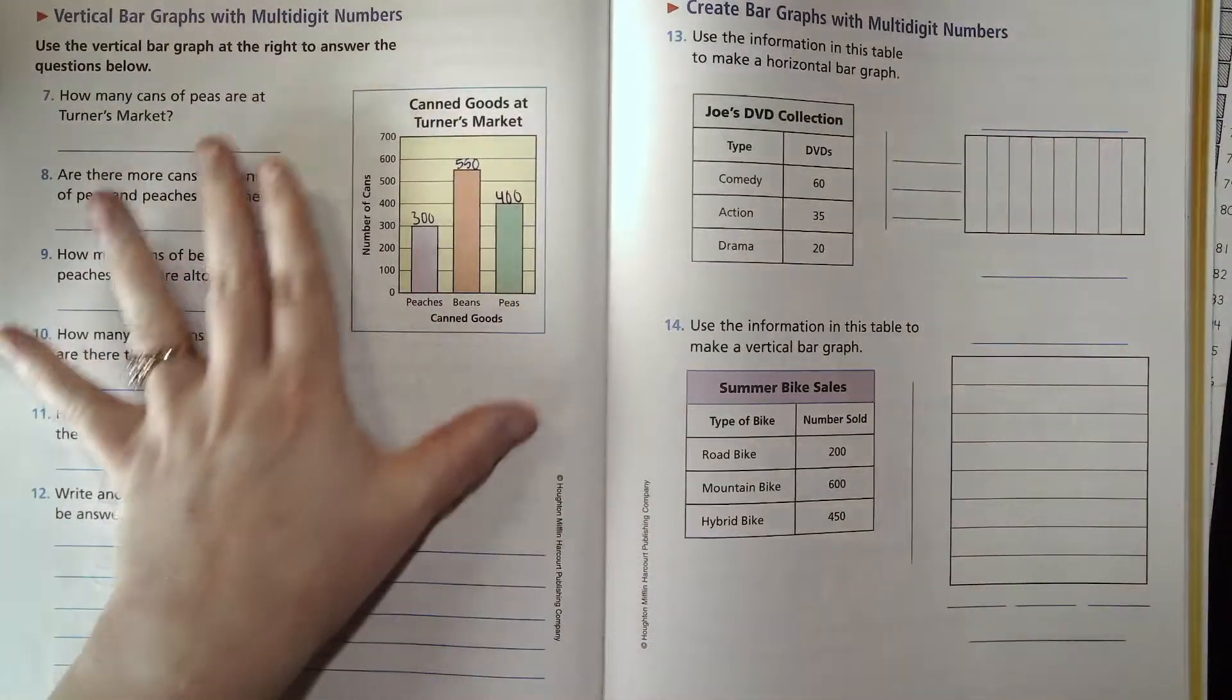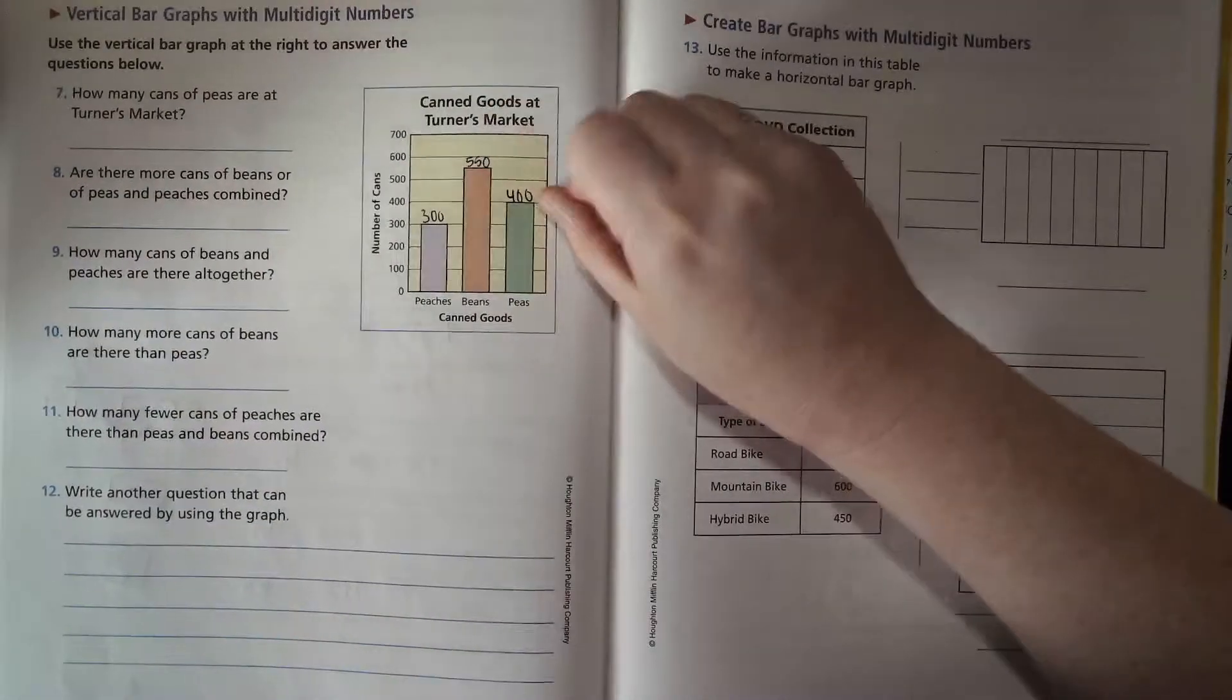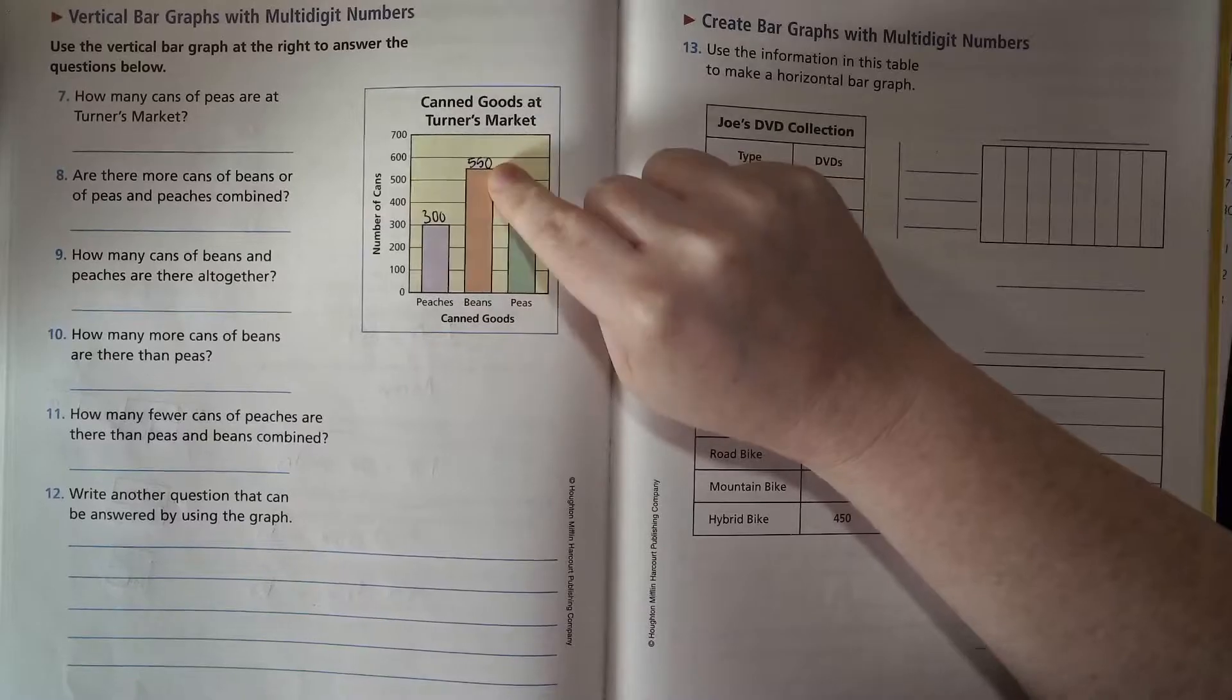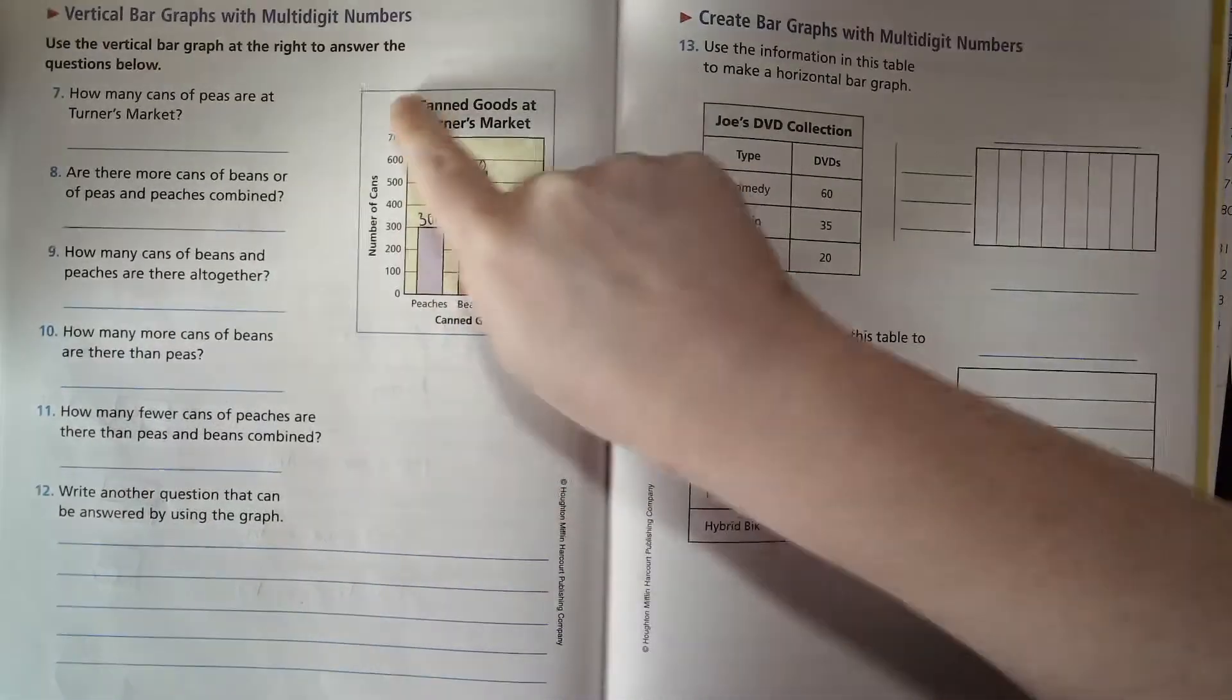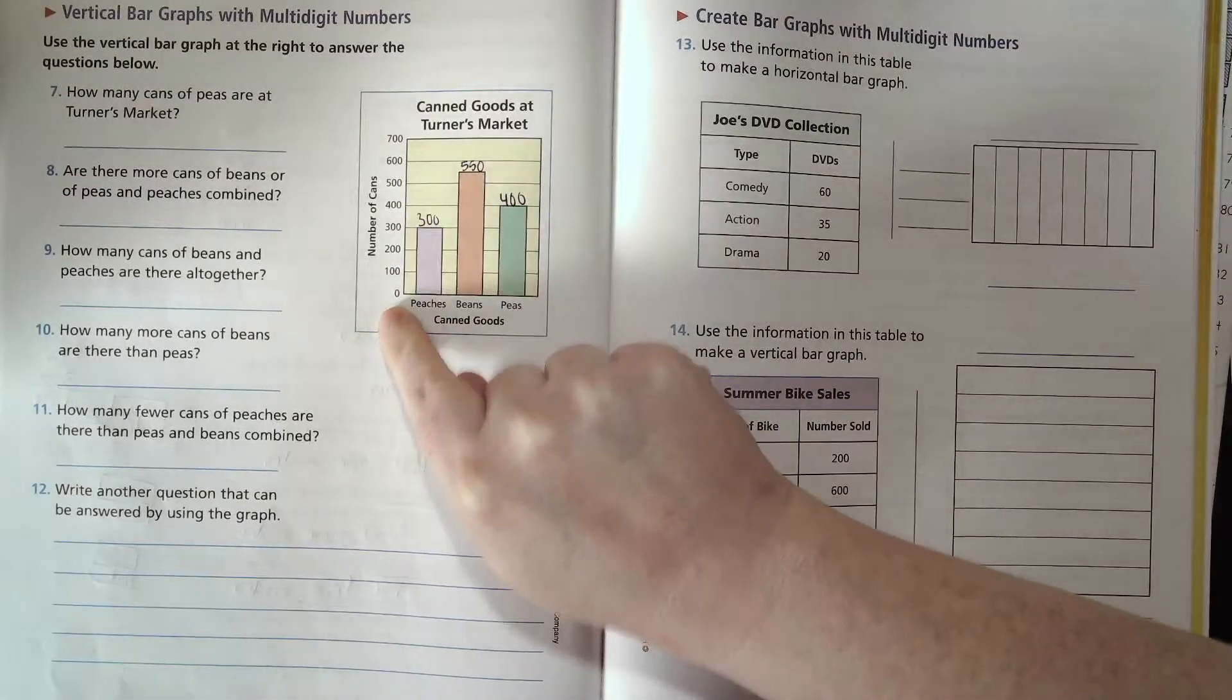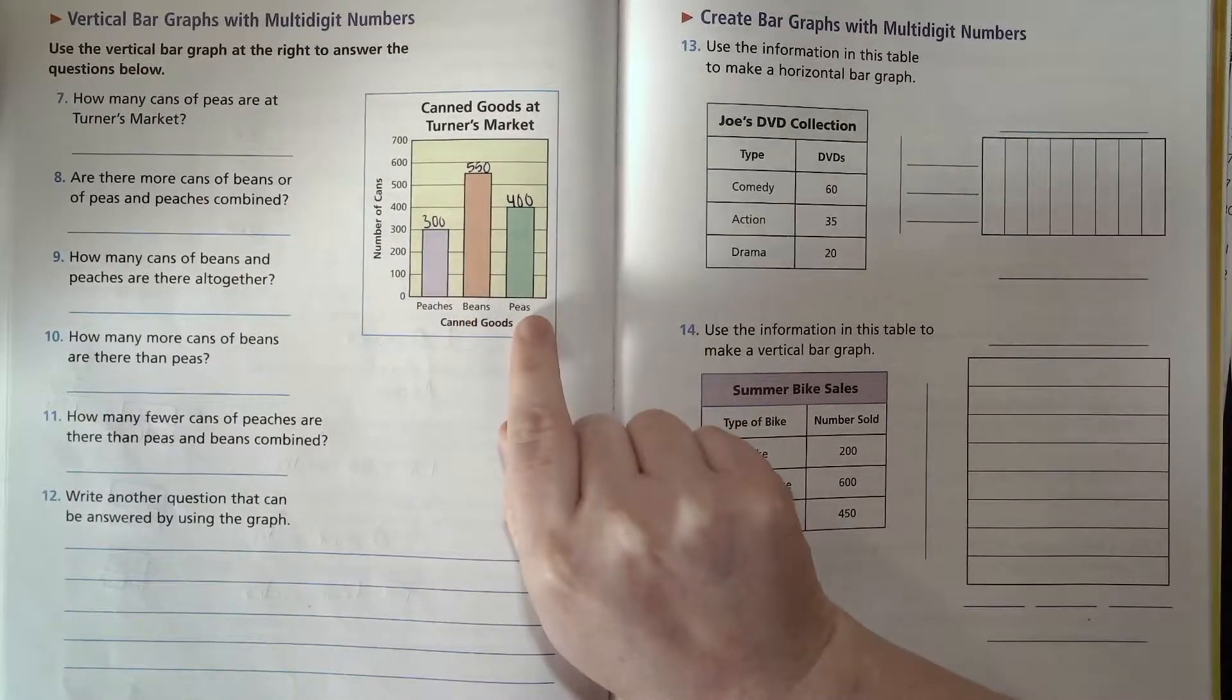Once you've done that, let's go ahead and look at this next side here. We're looking at a vertical bar graph. This is describing the number of canned goods at Turner's market, and I went ahead and I saw okay, here's the number of cans over here, starting at zero going up to 700. The types of canned goods we have: peaches, beans, and peas.